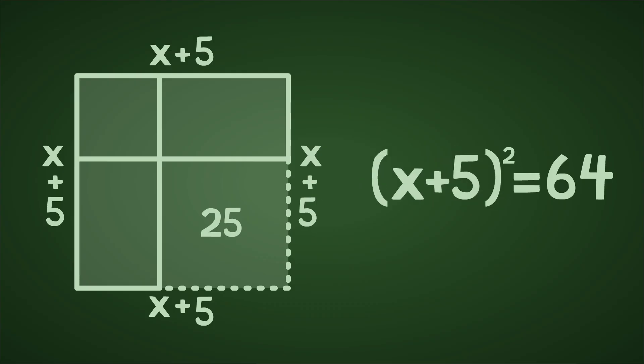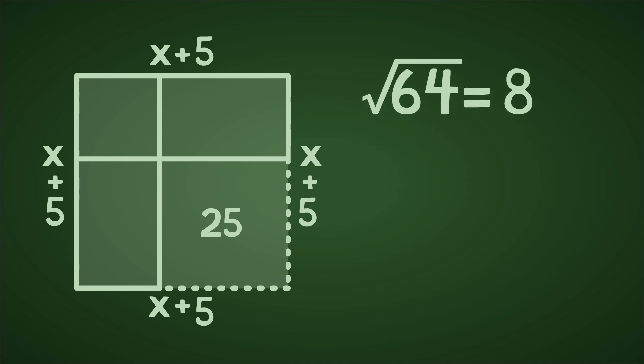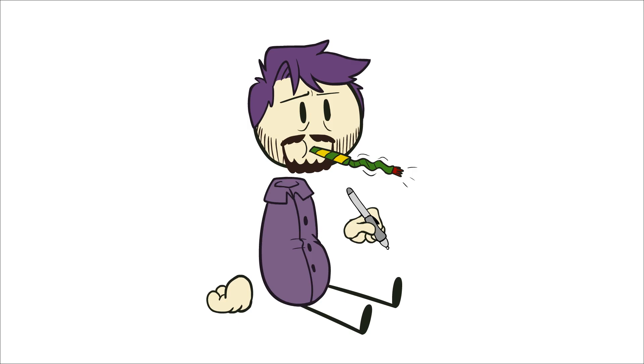But we'd also now have a perfect square with each side being x plus 5 long. So now we know that x plus 5 squared equals 64. Or, put another way, the square root of 64 equals x plus 5. And the square root of 64 is 8. So, 8 equals x plus 5, which means that x must be 3. Congratulations! You just did a quadratic equation using nothing but geometry.